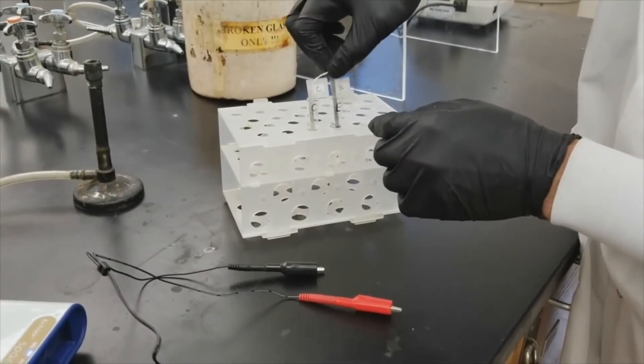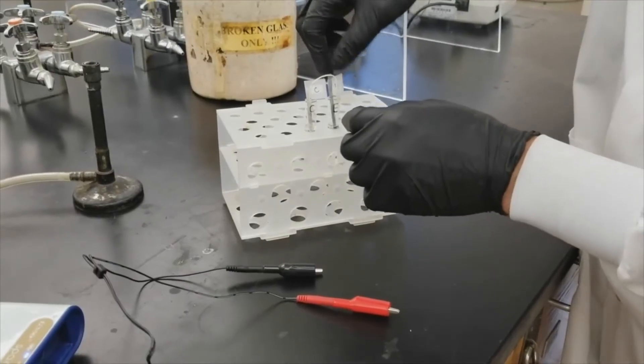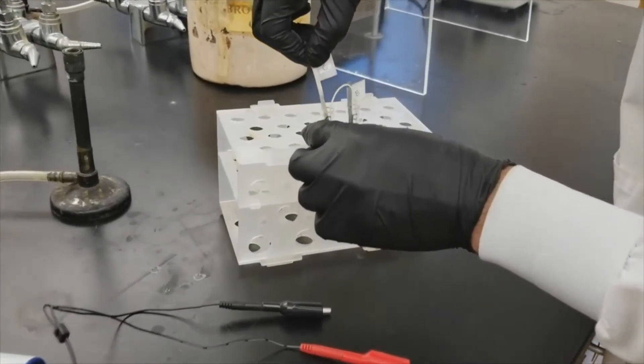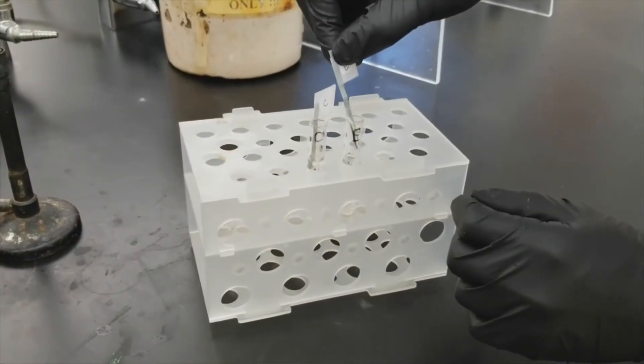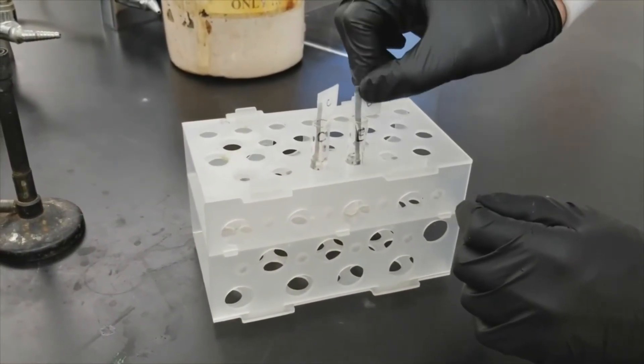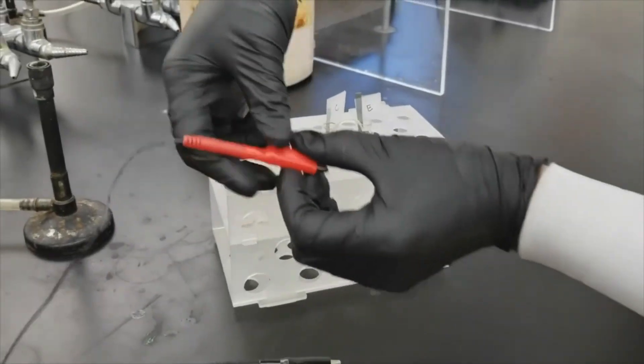You'll create your salt bridge by soaking a piece of string in potassium nitrate. Then place the string into the two test tubes so that each end of the string is submerged in the metal ion solutions. Make sure the string is pulled tight between the test tubes so it shouldn't dip down in between.